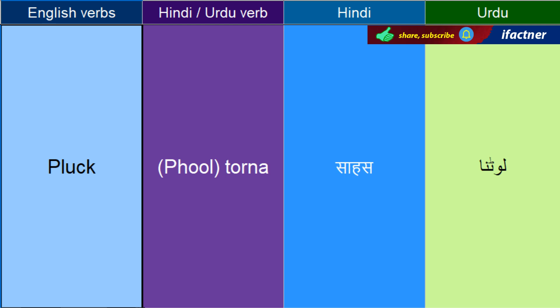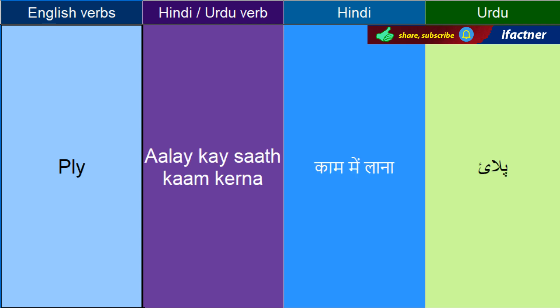Phool toorne ko kehengay — Pluck. Kaatne ko, phool ko, gulab ke phool ko: Pluck the roses — ke gulaab ke phool ko kaat do. Aale ke saath kaam kerne ko kehthayain — Ply.